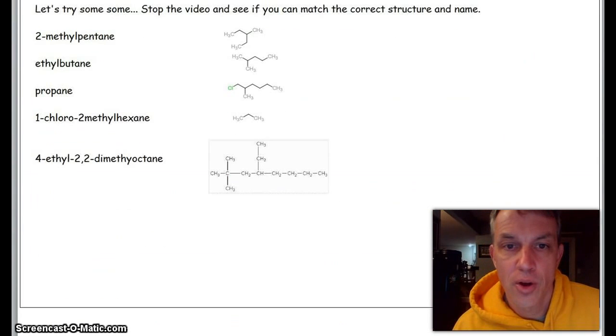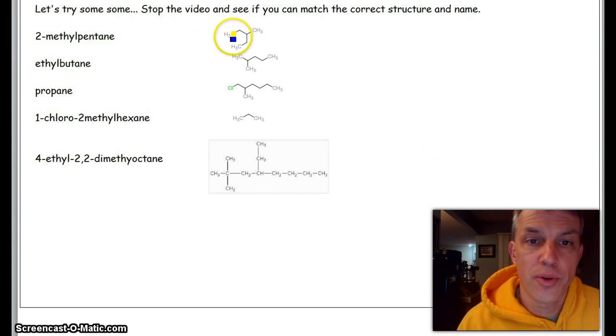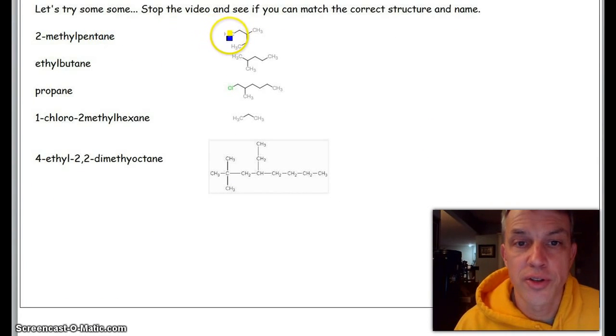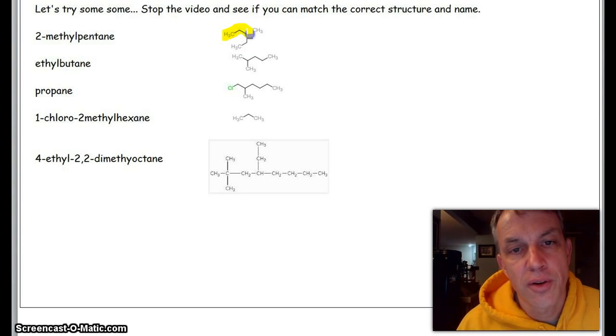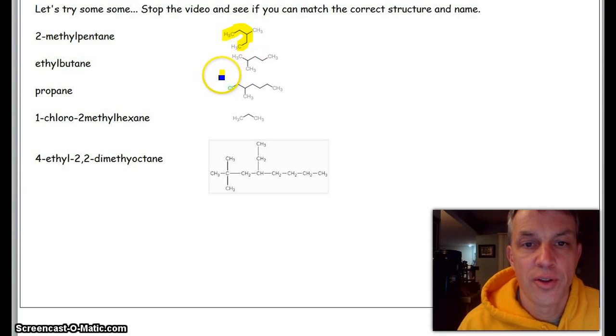So let's take a look at some real quick. Here we go. This one right here—if I can, let's find the longest chain. The longest chain is going to be this right here. If I count those carbons, I get one, two, three, four, five—five carbons.